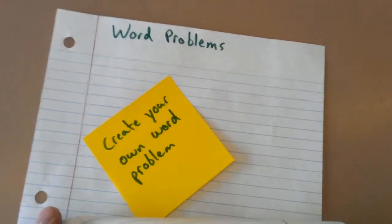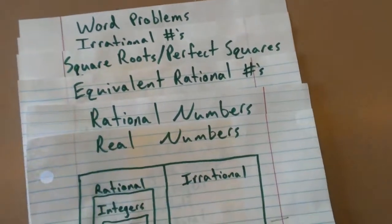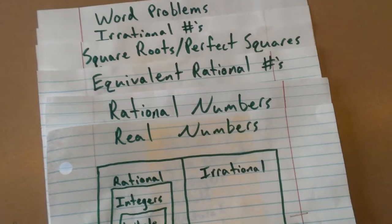In the first section of word problems, they need to create their own word problem using any of the following methods: irrational numbers, square roots and perfect squares, or equivalent rational numbers.